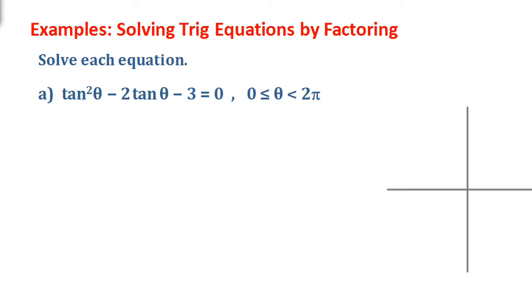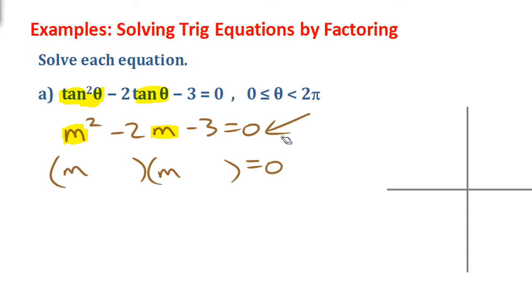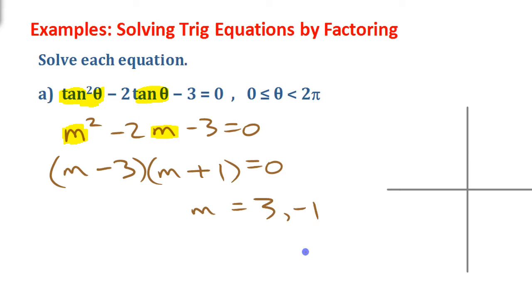Think of tan theta as a single variable — think of what you would do if this said m squared minus 2m minus 3 equals 0, as in if tan theta was just m. You'd probably try and factor it, writing something like (m)(m) and it needs to equal 0 on the other side. You'd eventually come to the conclusion that it factors, and then you can write your two solutions.